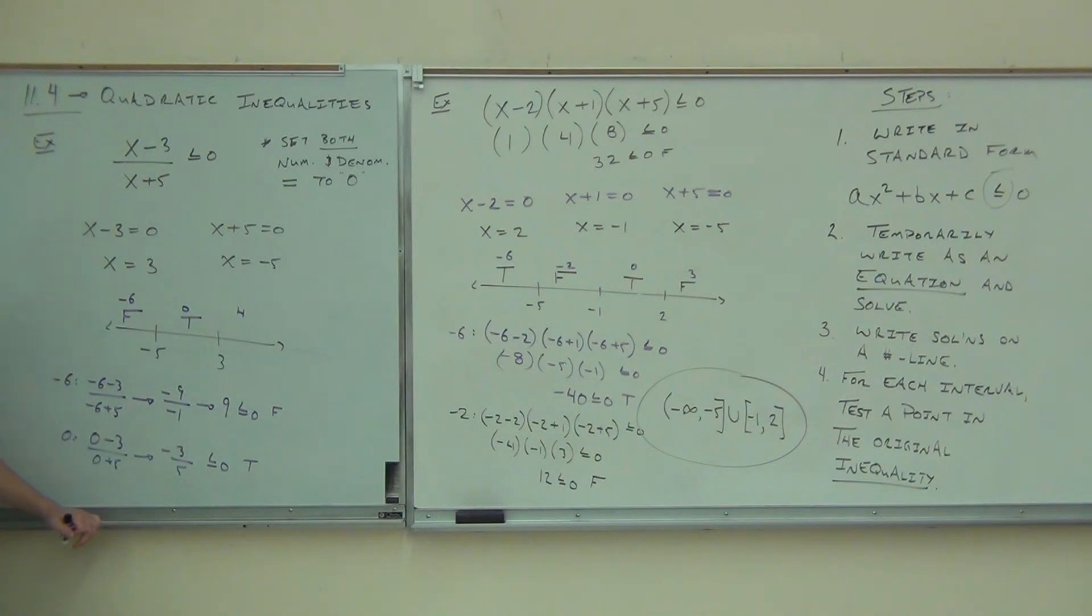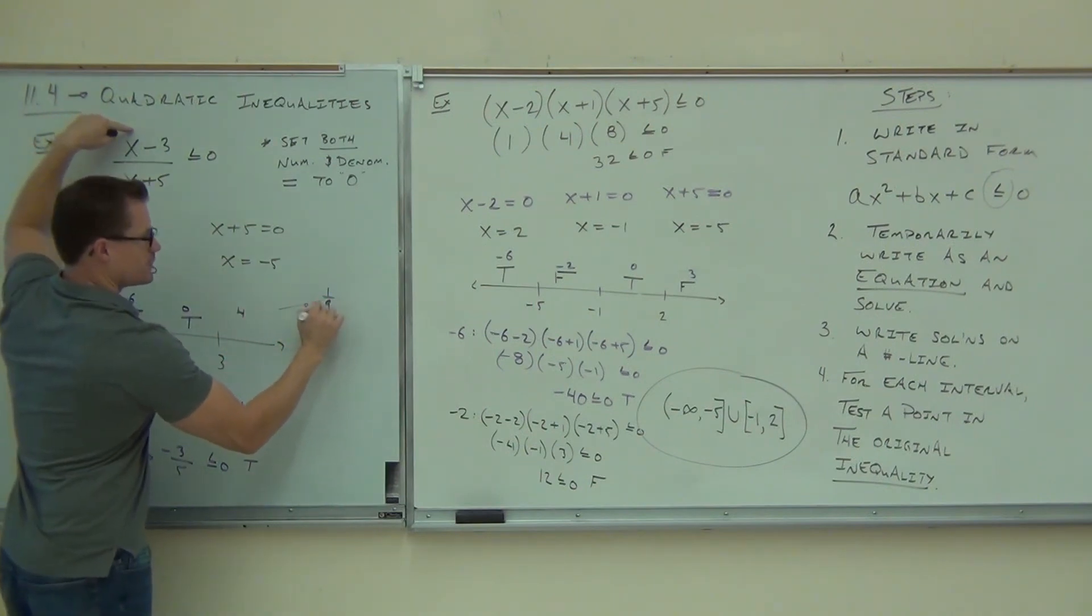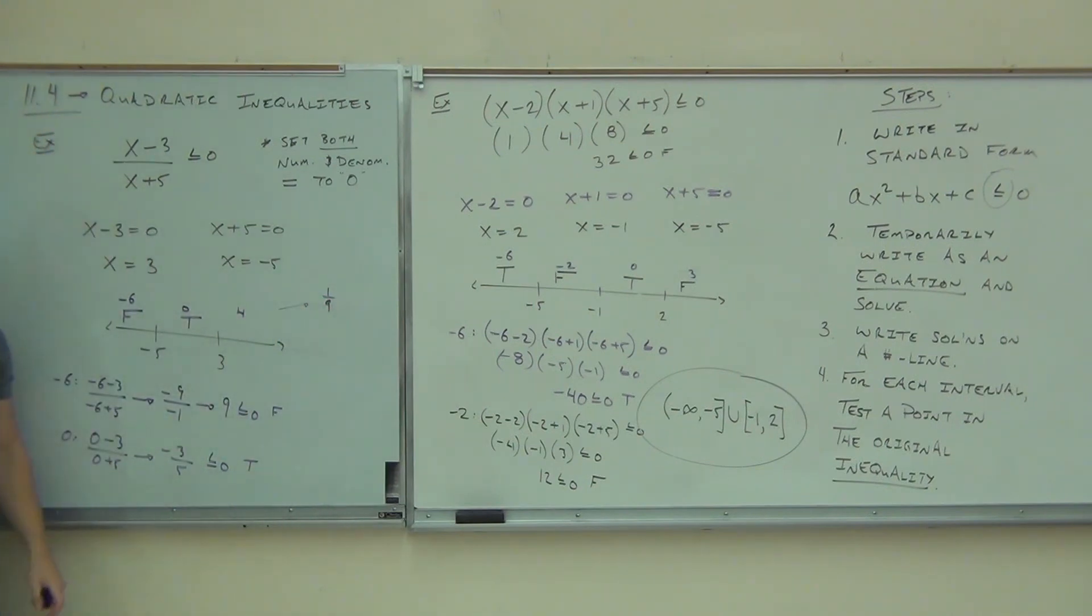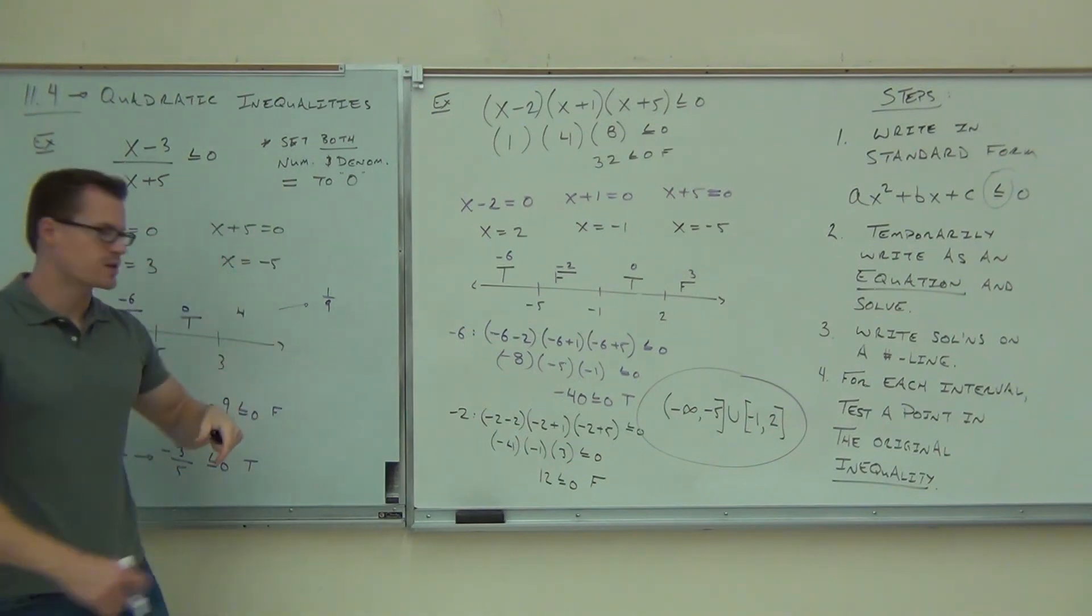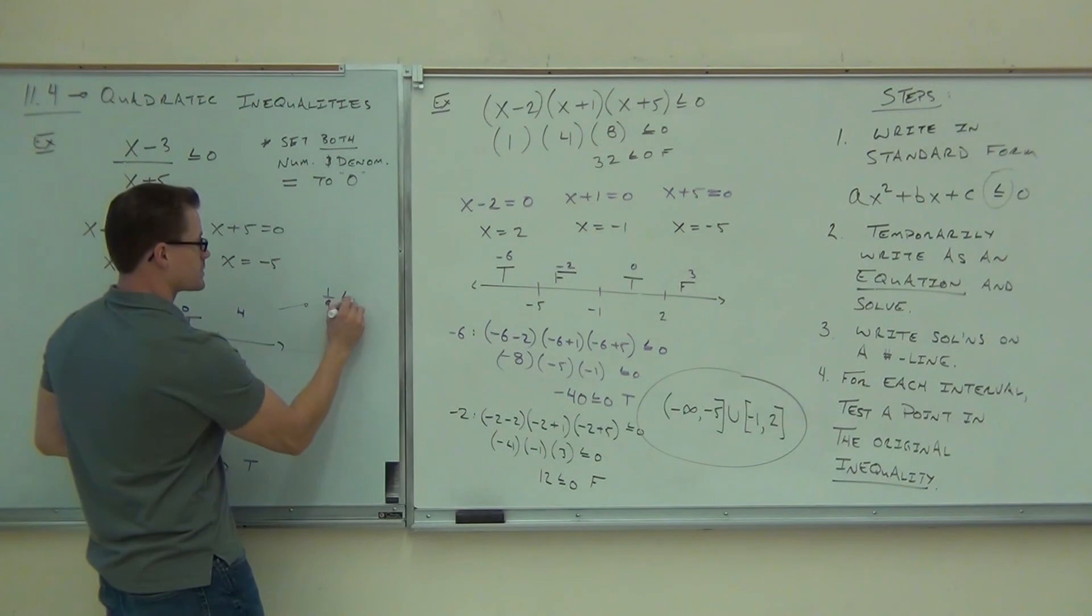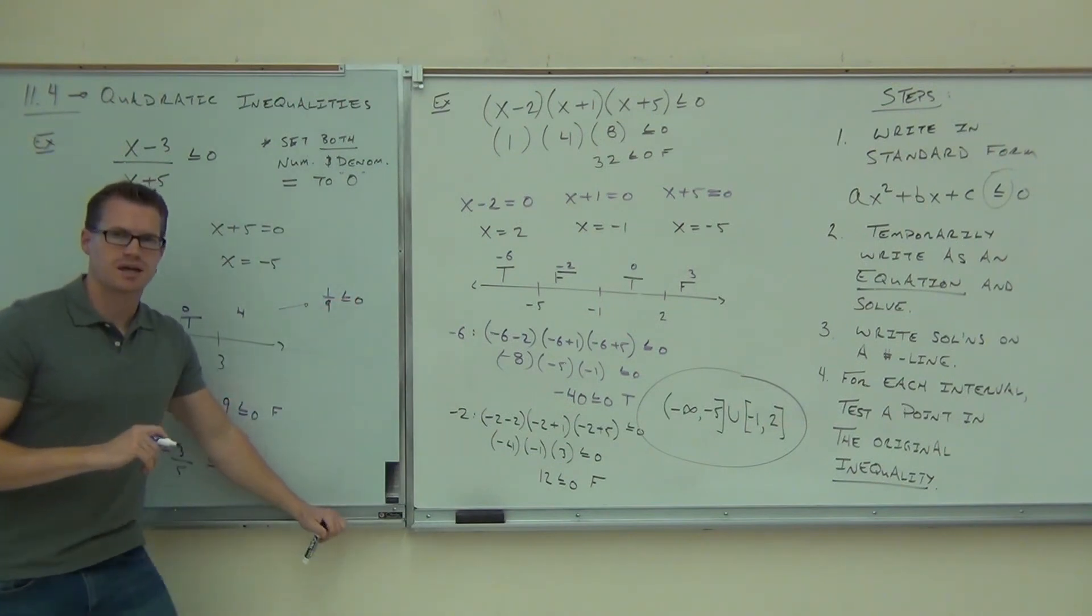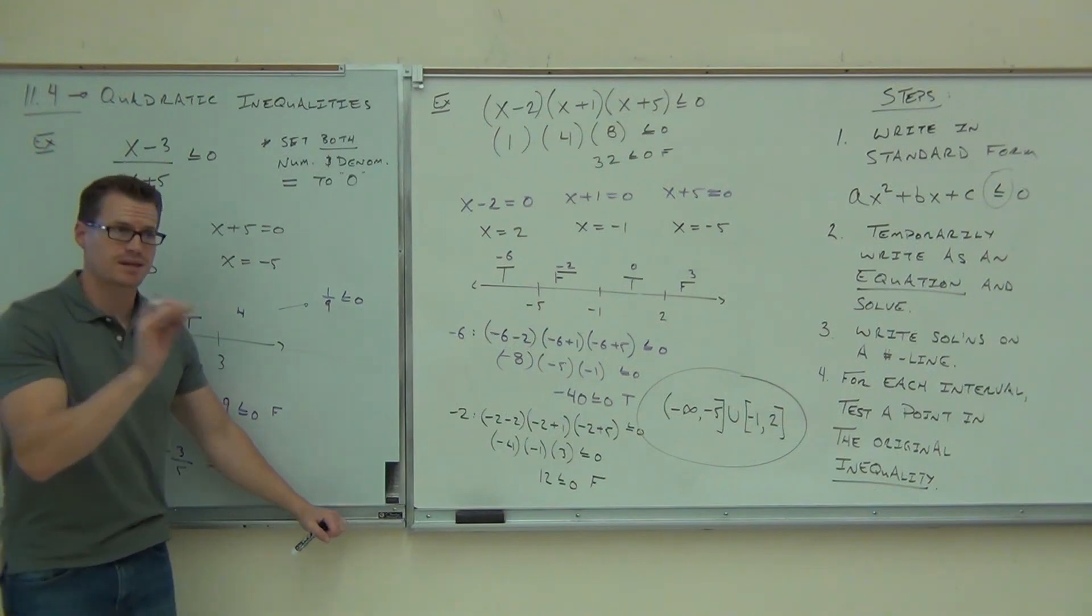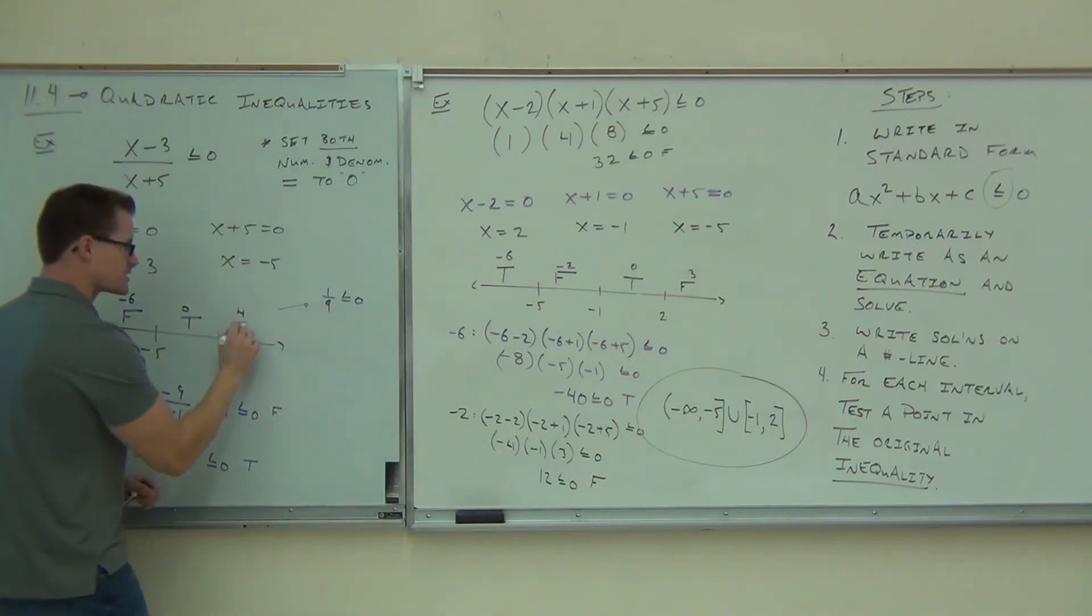Last one, if we check 4, you're going to get 1 ninth. You see how we're getting 1 ninth? I want you to also notice the relationship. This is 9, this is 1 ninth. Both positive though. Why? Because you have a negative over negative or a positive over positive. Is 1 ninth less than or equal to 0? No. 1 ninth is a positive number. It's little but it's a positive number. That means this is false.